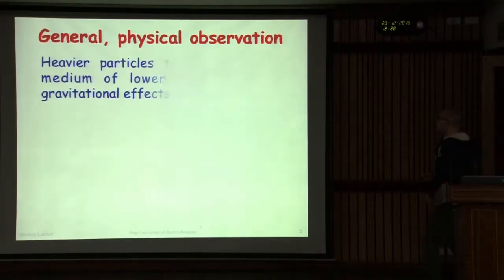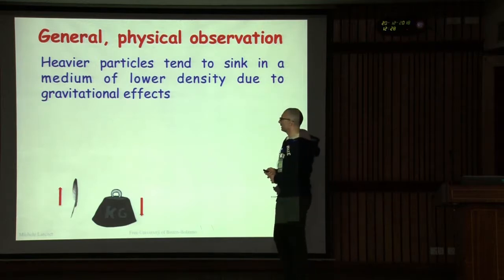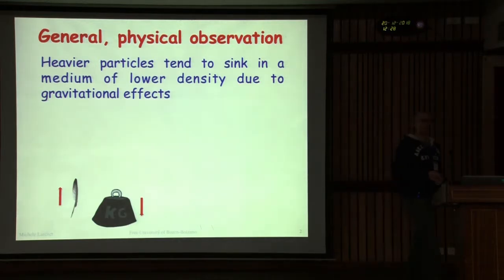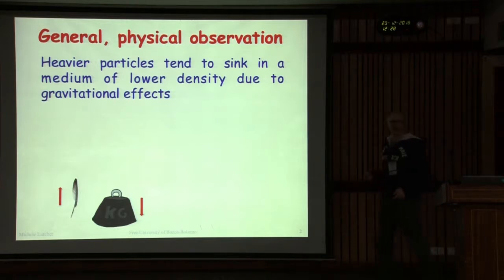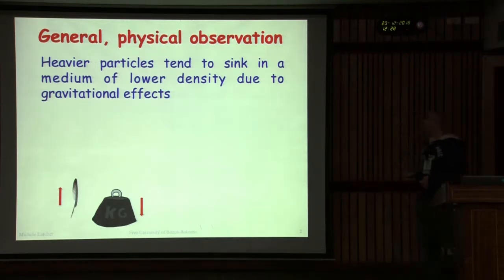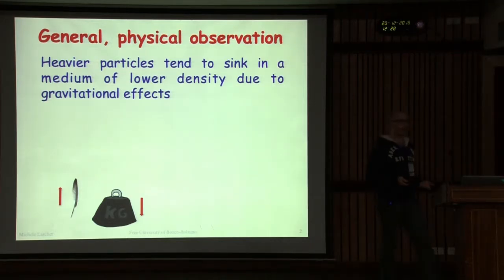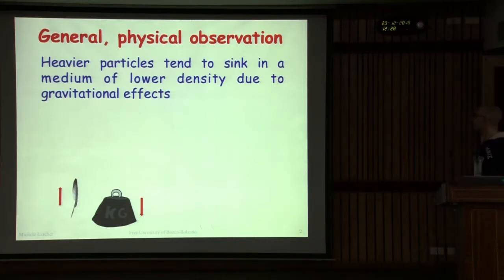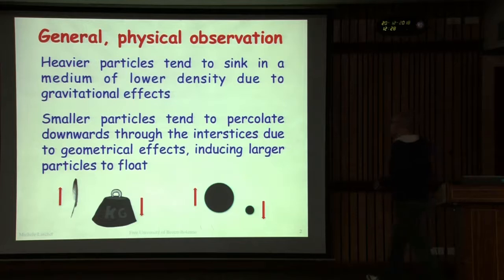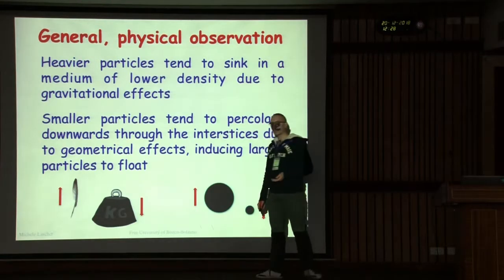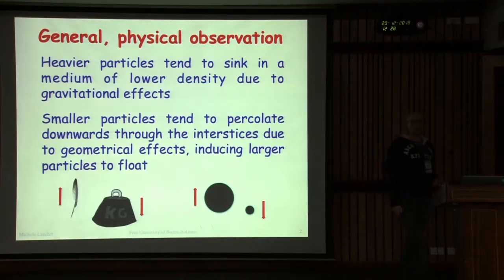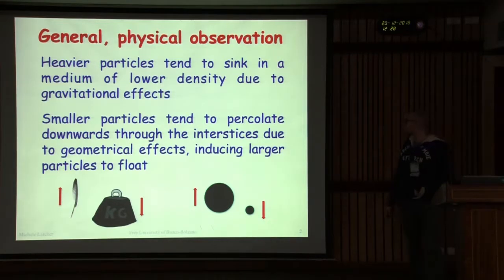Let's start from some general physical observations that we also heard during the previous day. When you mix particles with different density and different size, what typically is observed is that the particles with a larger density tend to go down and particles with a lower density tend to go up. While when you have particles with different sizes, what typically is observed is that the larger particles rise while the small ones tend to go down.